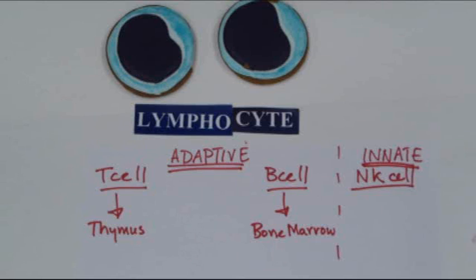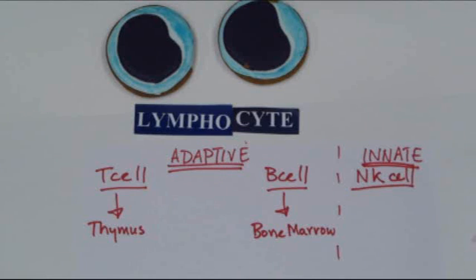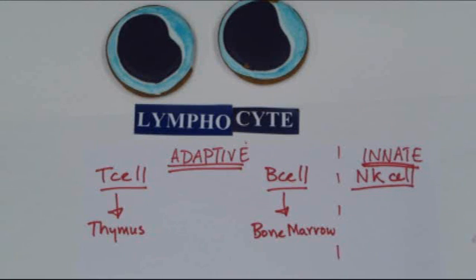The B cell is the cell that eventually becomes a plasma cell, and this cell is actively secreting antibodies. Both T cells and B cells are part of what we call the adaptive immune system, meaning that once these cells see something come into the body, they are able to remember that and to launch a defense against it should it ever arrive in the body again.